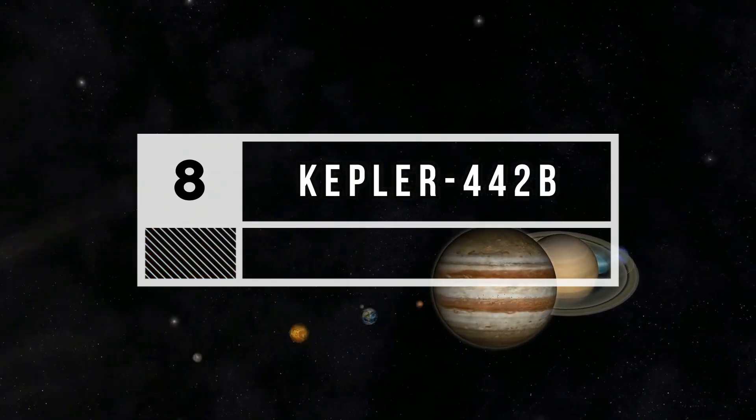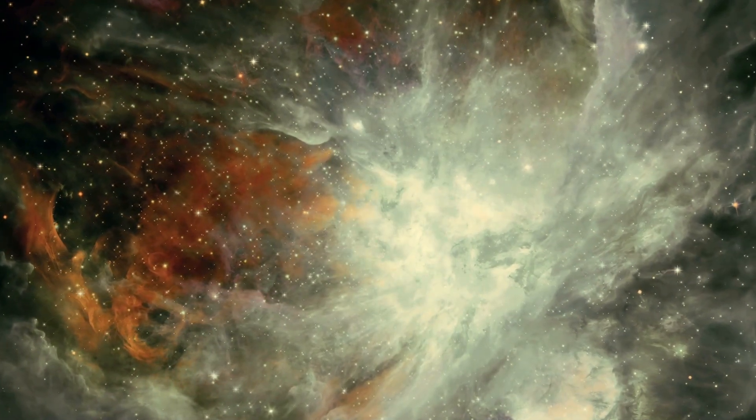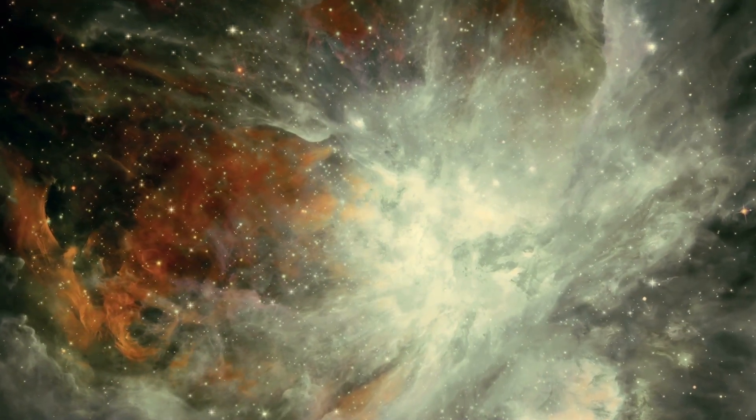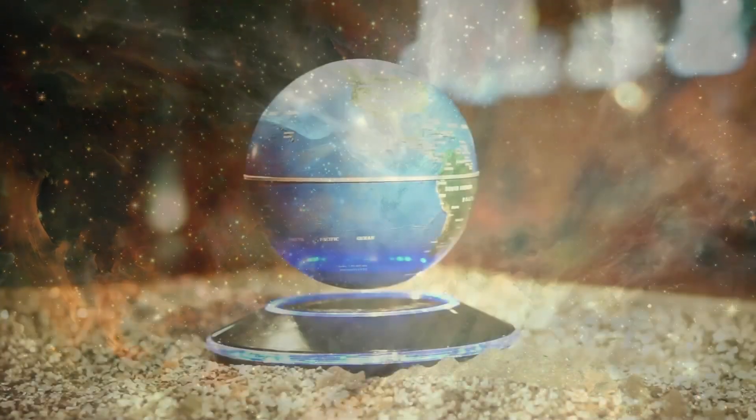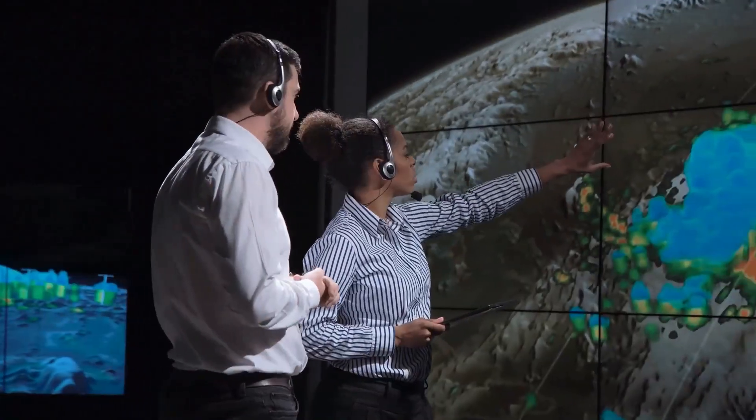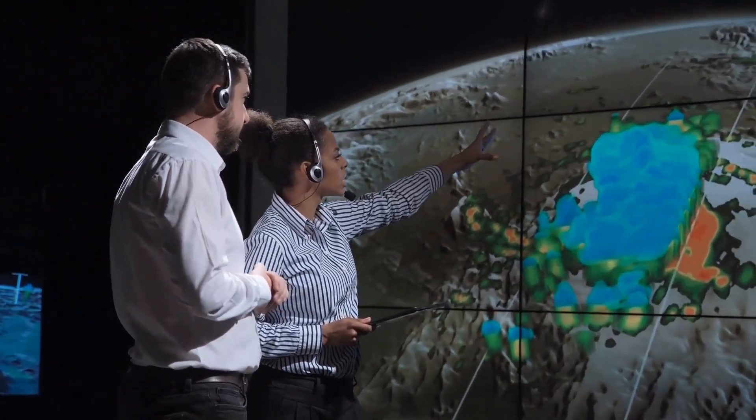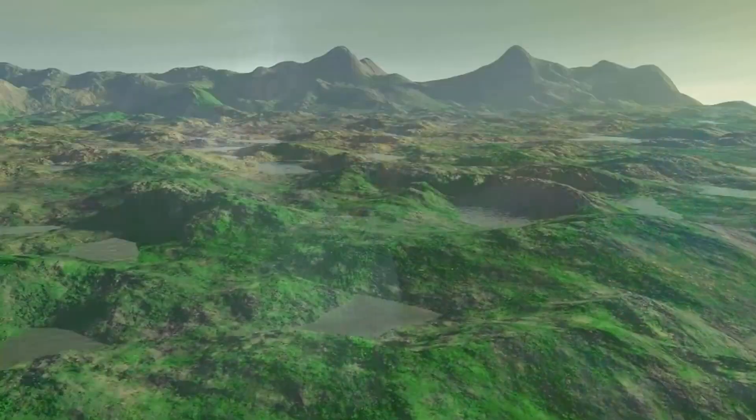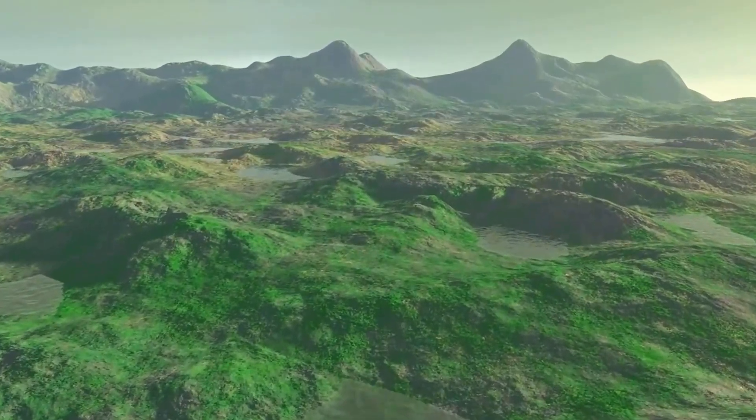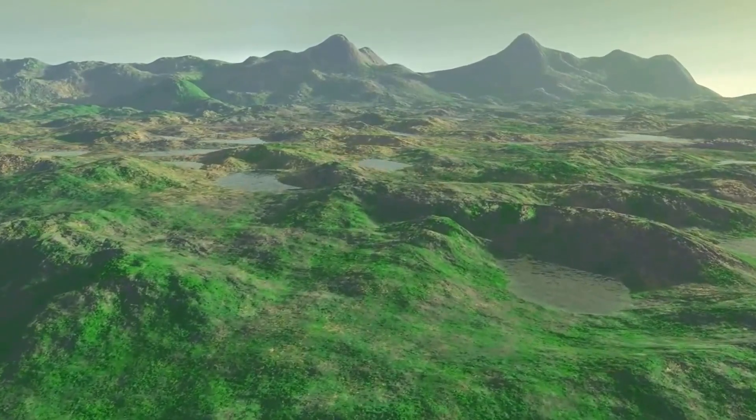Number 8: Kepler-442b. Like Kepler-438b, it is also found in the Lyra constellation, but a different solar system. It is about a third larger than the Earth. 97% of scientists are sure that life is possible on this planet. Its mean temperature is 32 degrees Fahrenheit and one year is 112 days.